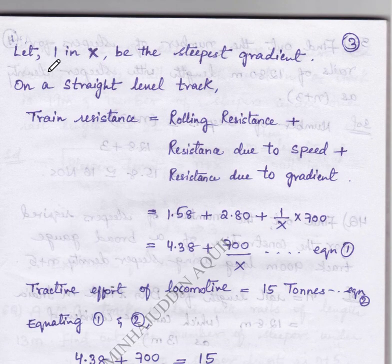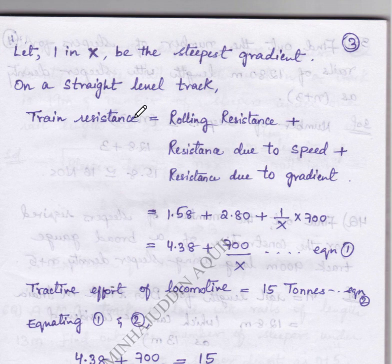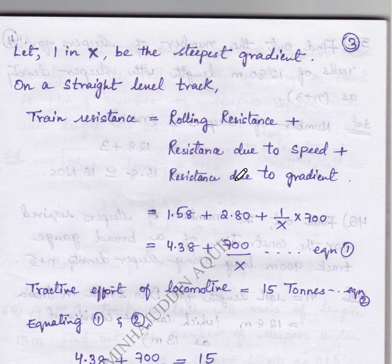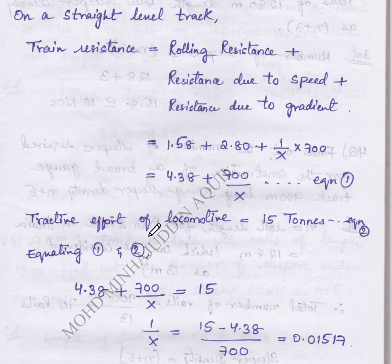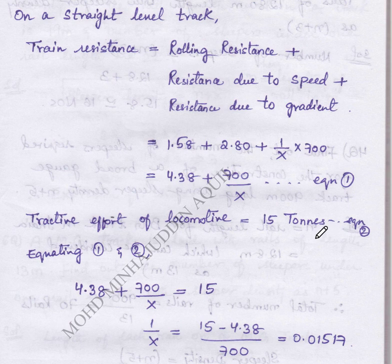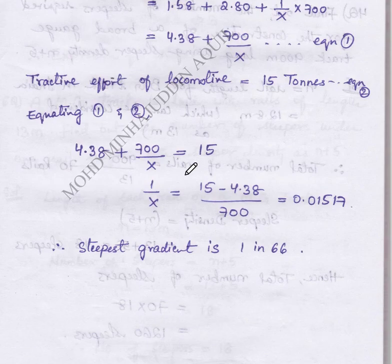Now, let 1 in X be the steepest gradient. On a straight level track, train resistance equals rolling resistance plus resistance due to speed plus resistance due to gradient. Adding up all the values we will get equation 1. Next, the tractive effort of locomotive equals 15 tons, which will be equation 2. Now equating these two equations.